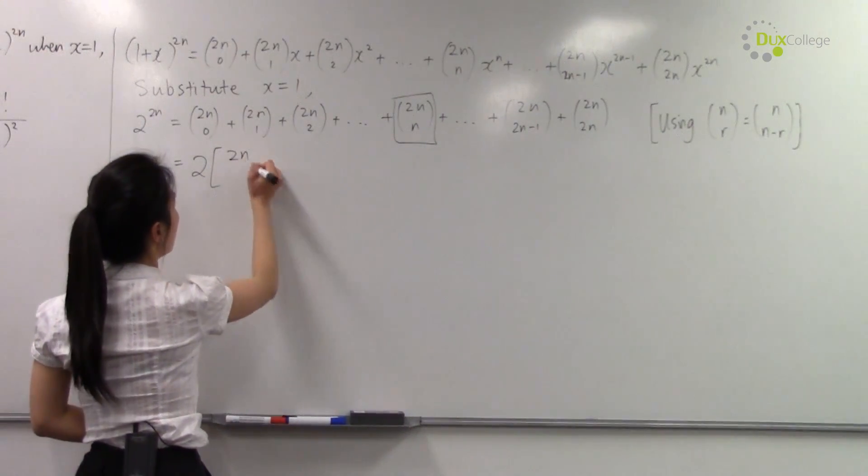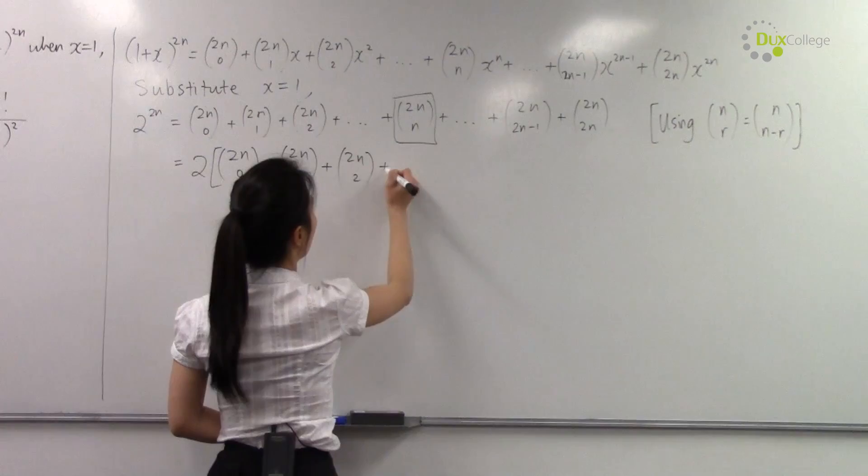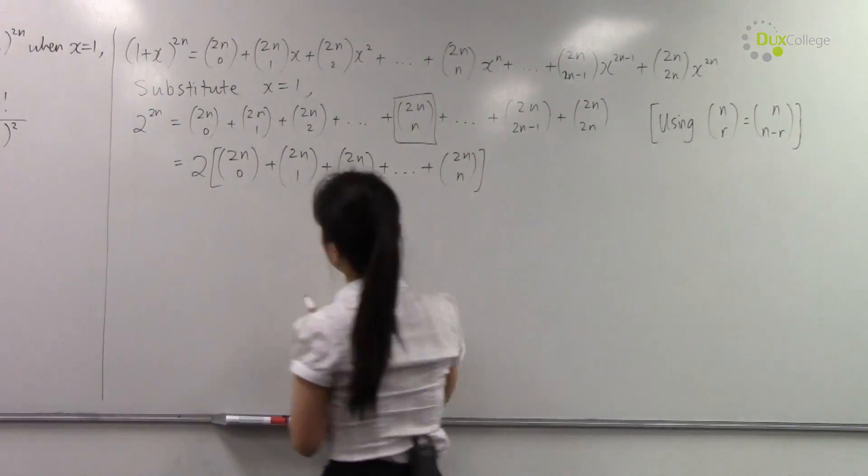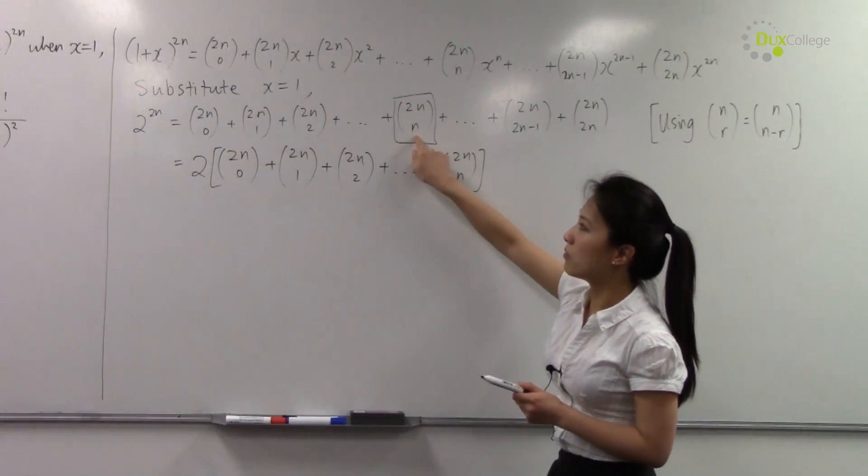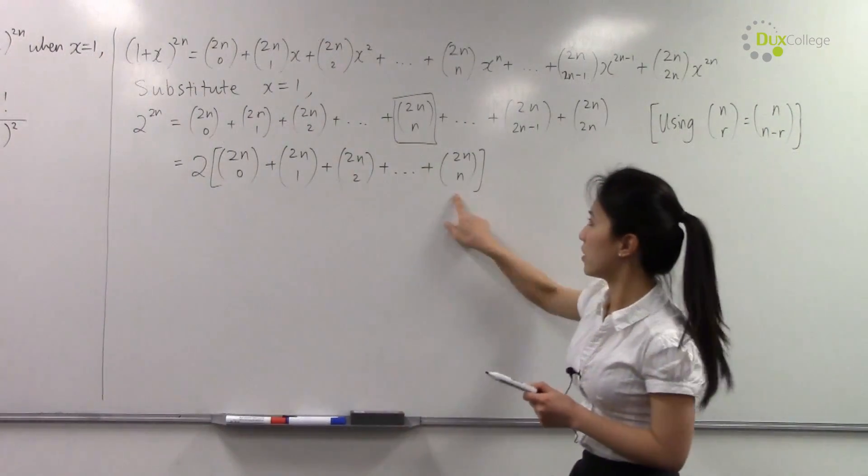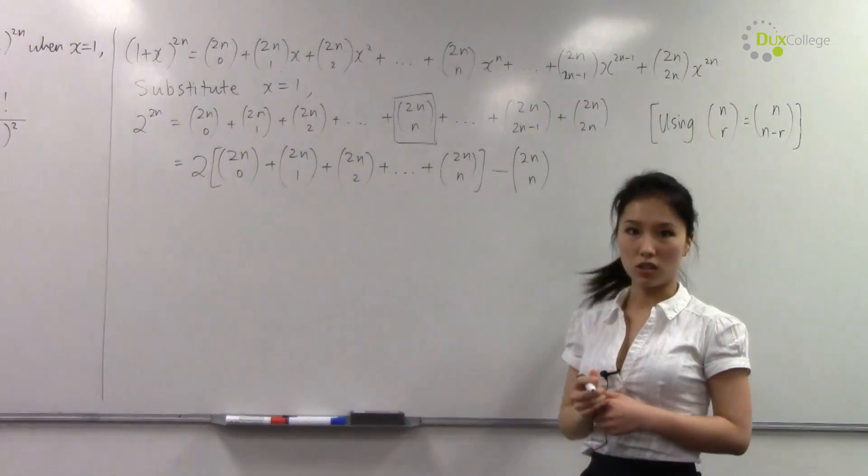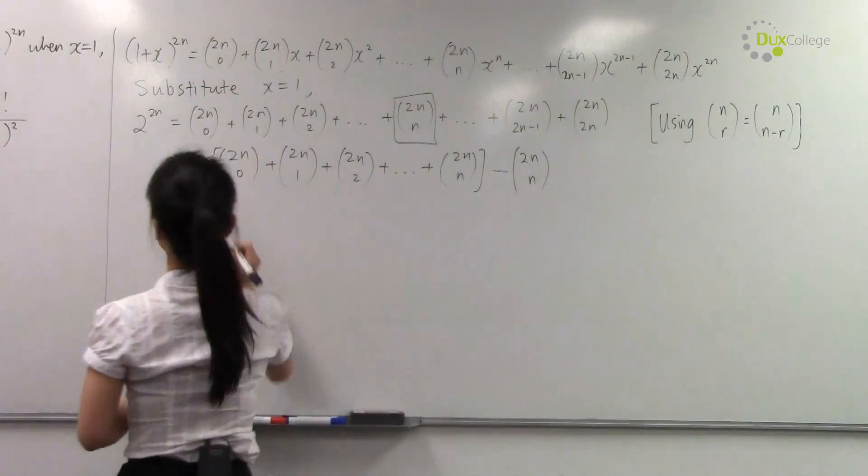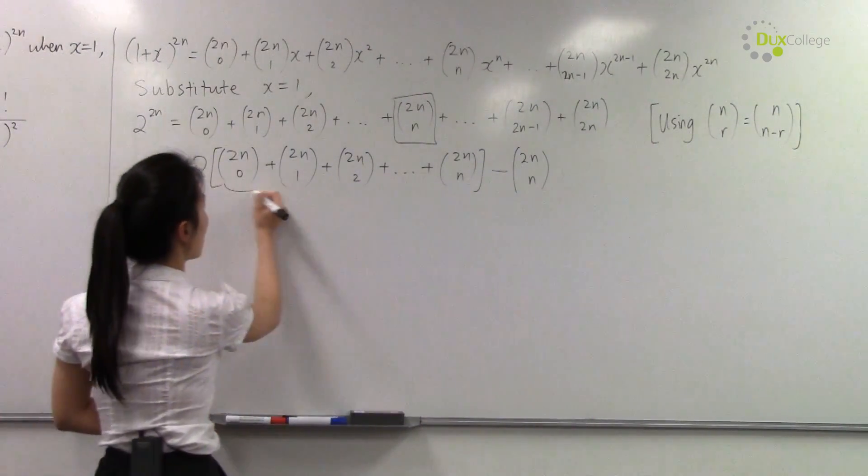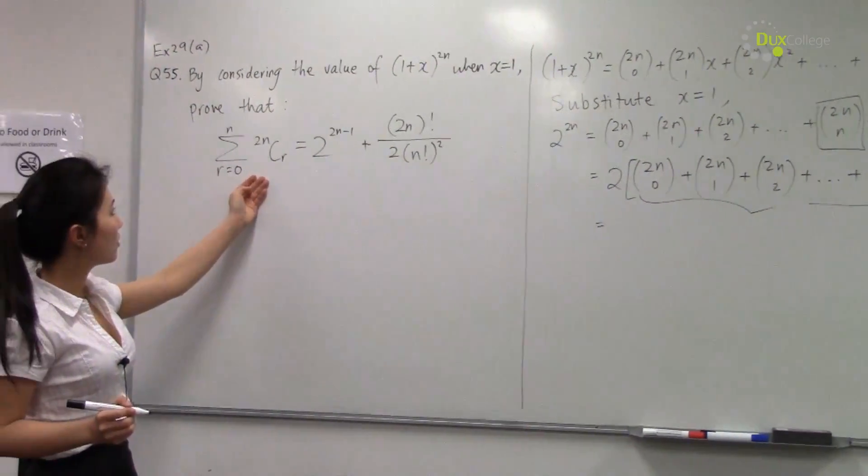So we can do two lots of 2n choose 0 plus 2n choose 1, 2n choose 2, all the way up to 2n choose n. You can see that this is by itself, it doesn't double up, but in this line I've included two lots of this, which means I need to subtract 2n choose n. You can see here why I need to do that, because this part here is exactly the same as this sigma expansion.